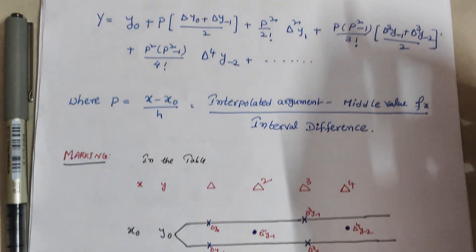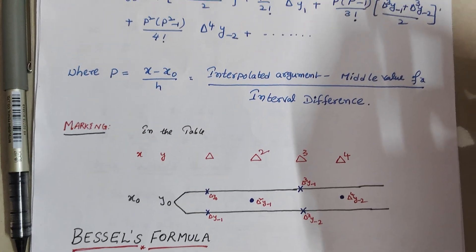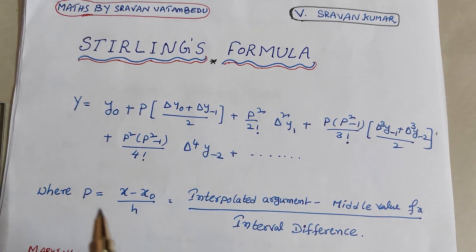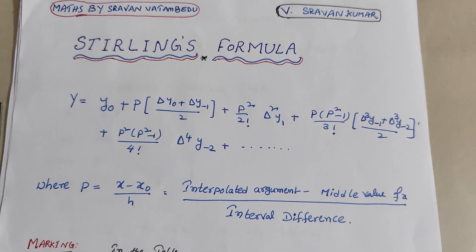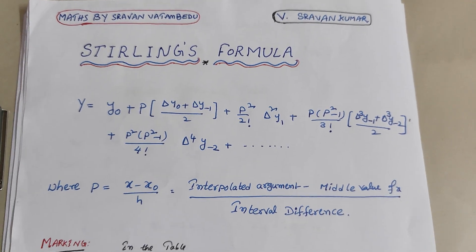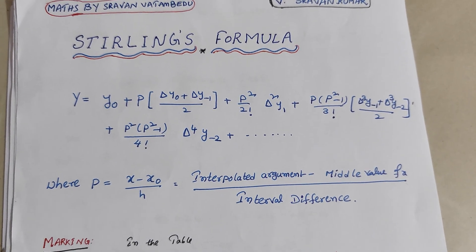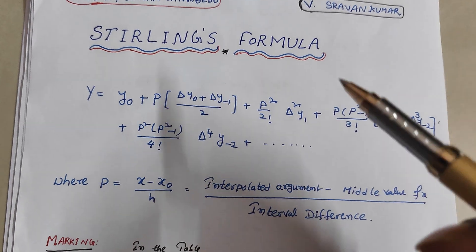Stirling's formula and Bessel's formula. We are going to talk about Stirling's formula and Bessel's formula. First we have Newton forward, Newton backward, Gauss forward and Gauss backward.